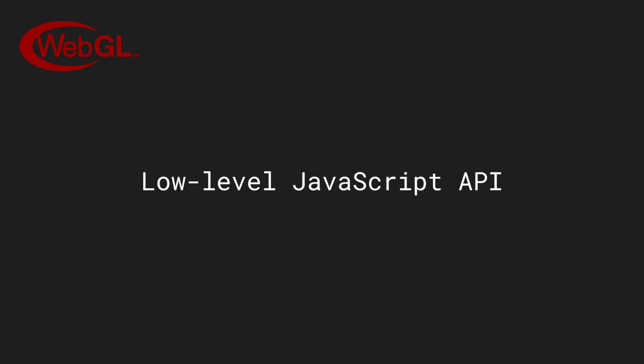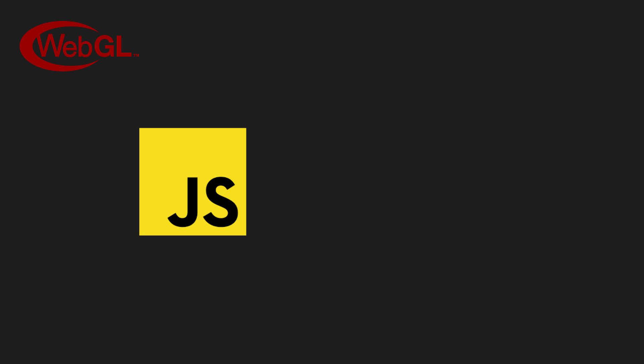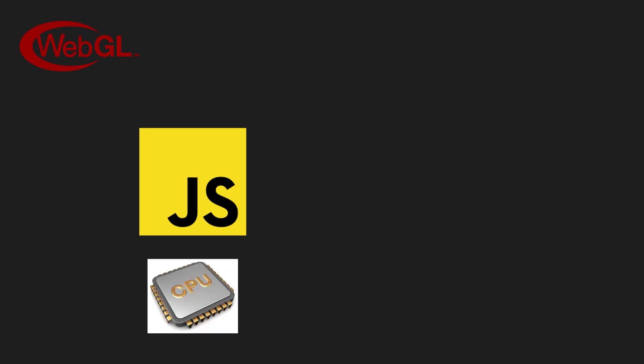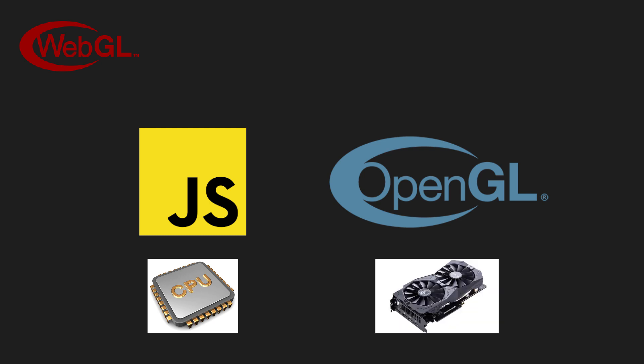Let's start with WebGL, which is short for Web Graphics Library. This one might be the most difficult one to understand. It is a low-level JavaScript API for rendering 3D and 2D graphics by drawing points, lines, and triangles in an HTML canvas. WebGL is written in two languages: JavaScript, used for the control code executed on the CPU, and GLSL, short for OpenGL Shading Language, for the shader code executed on the GPU. The GPU is designed specifically for rendering, which makes it possible to render complex 3D scenes in your browser.